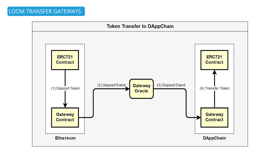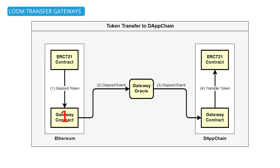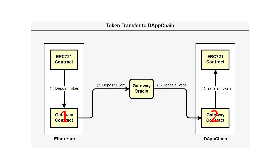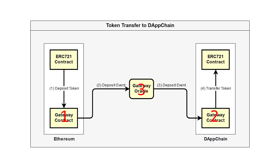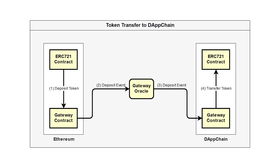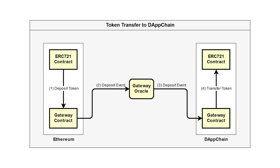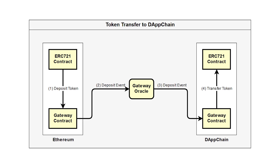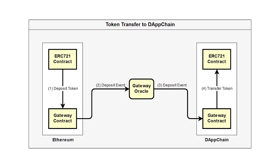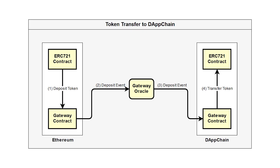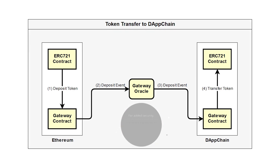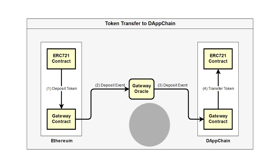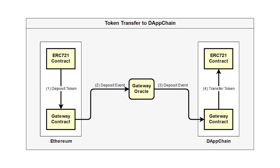A transfer gateway consists of three main components: one smart contract on the main net, another smart contract on the side chain, and an off-chain oracle that listens to events on both contracts. When an asset is sent to the gateway contract on the main net, an event is emitted which is picked up by the oracle. The oracle then sends a message to the contract on the side chain, which mints a copy of that asset for use on the side chain. When you're done using that asset on the side chain, you can then withdraw it and the process is done in reverse.